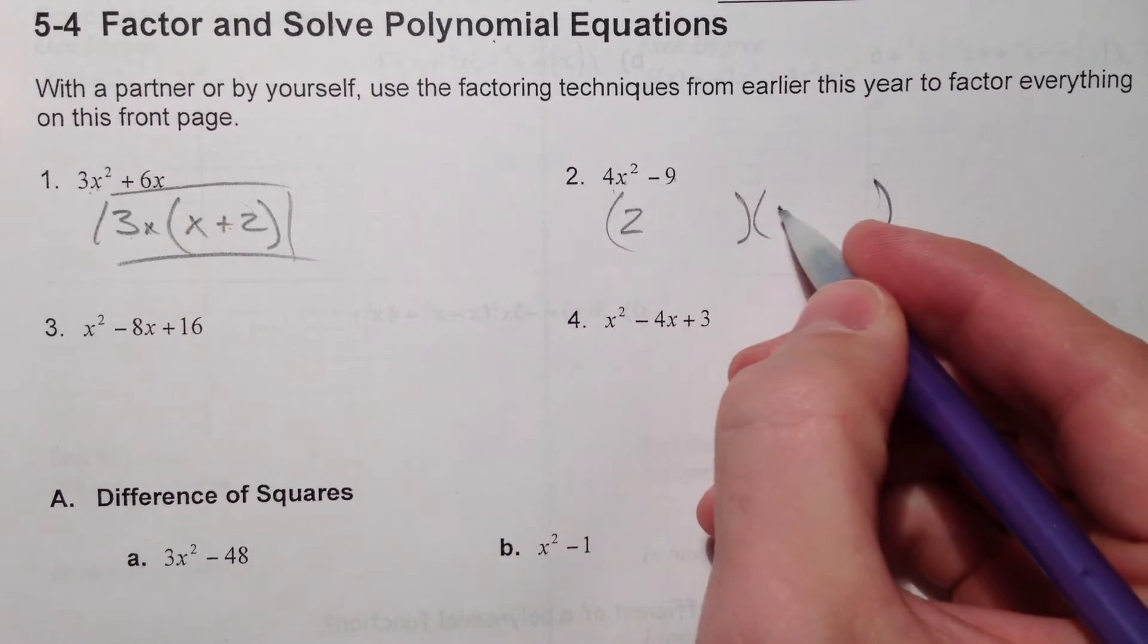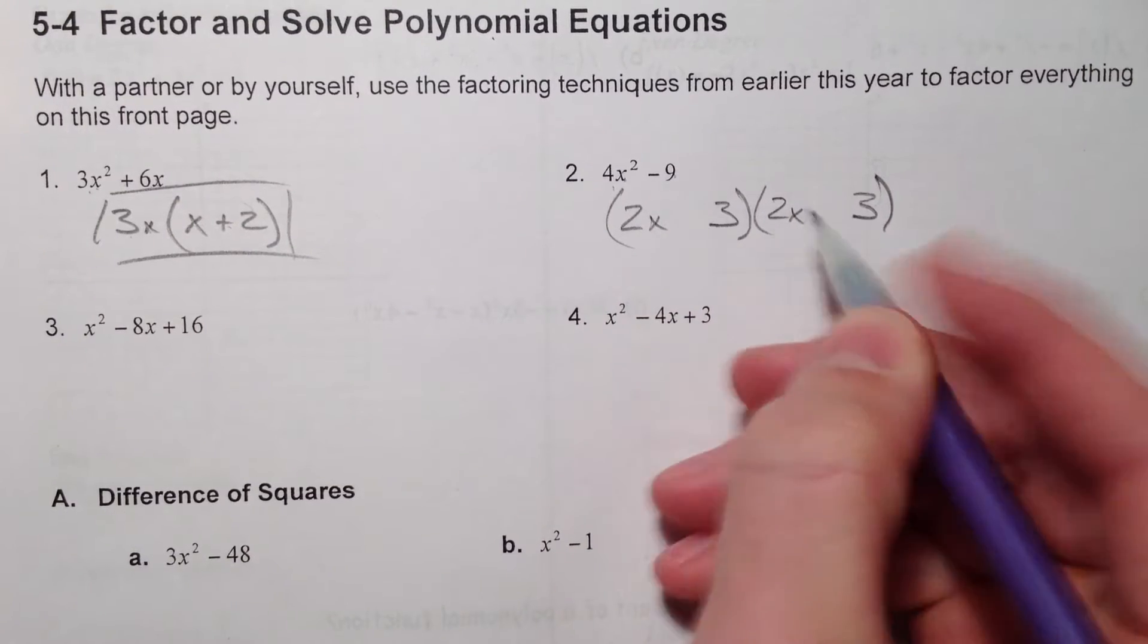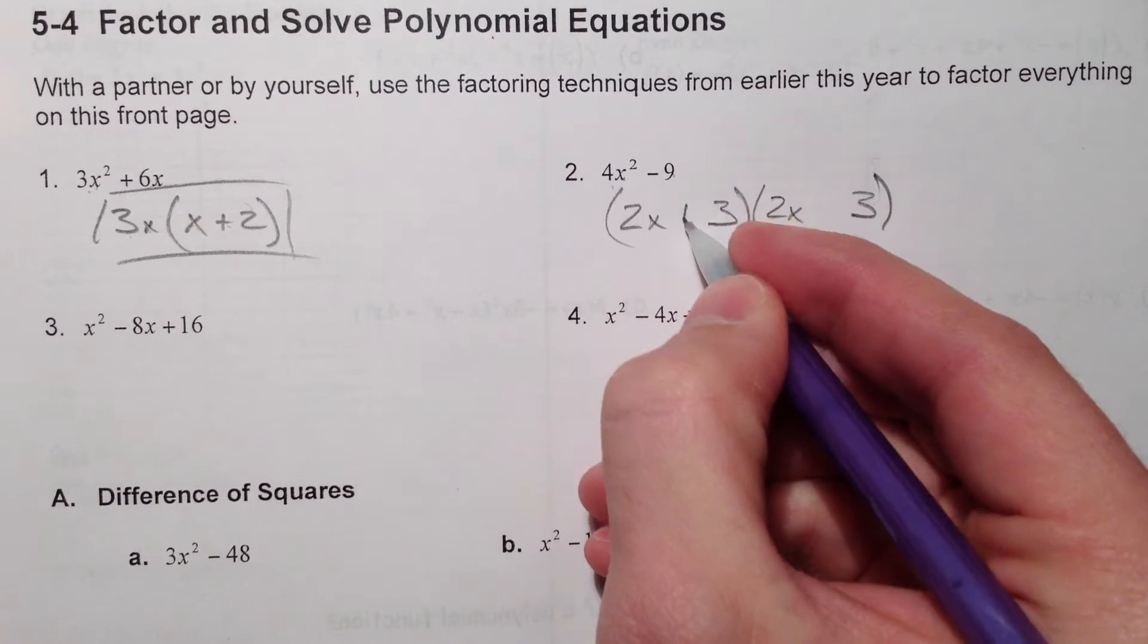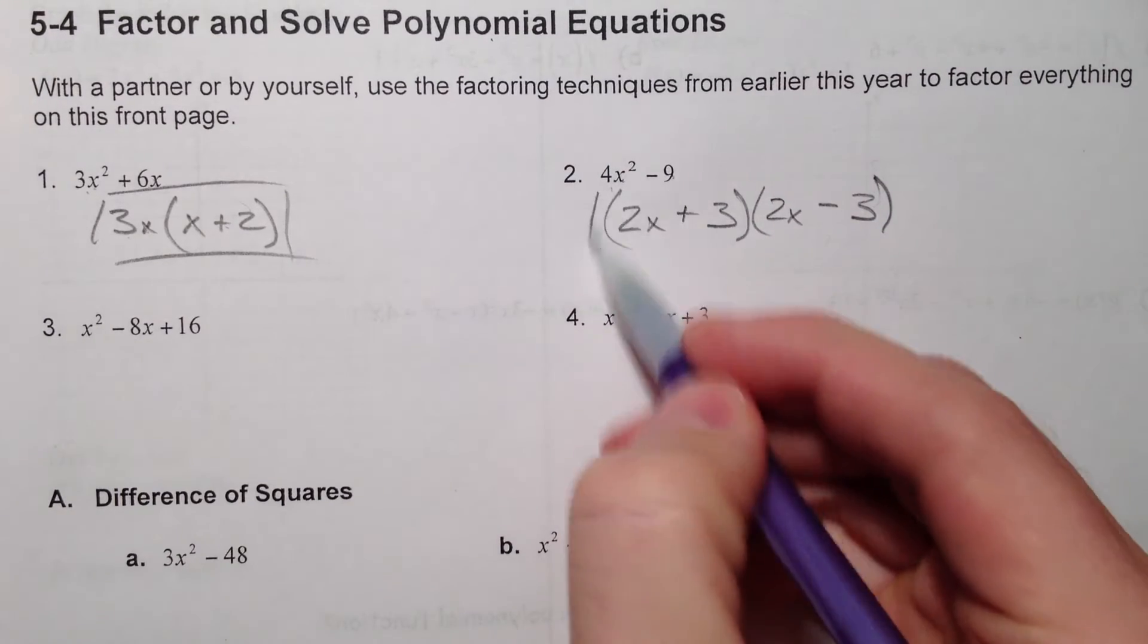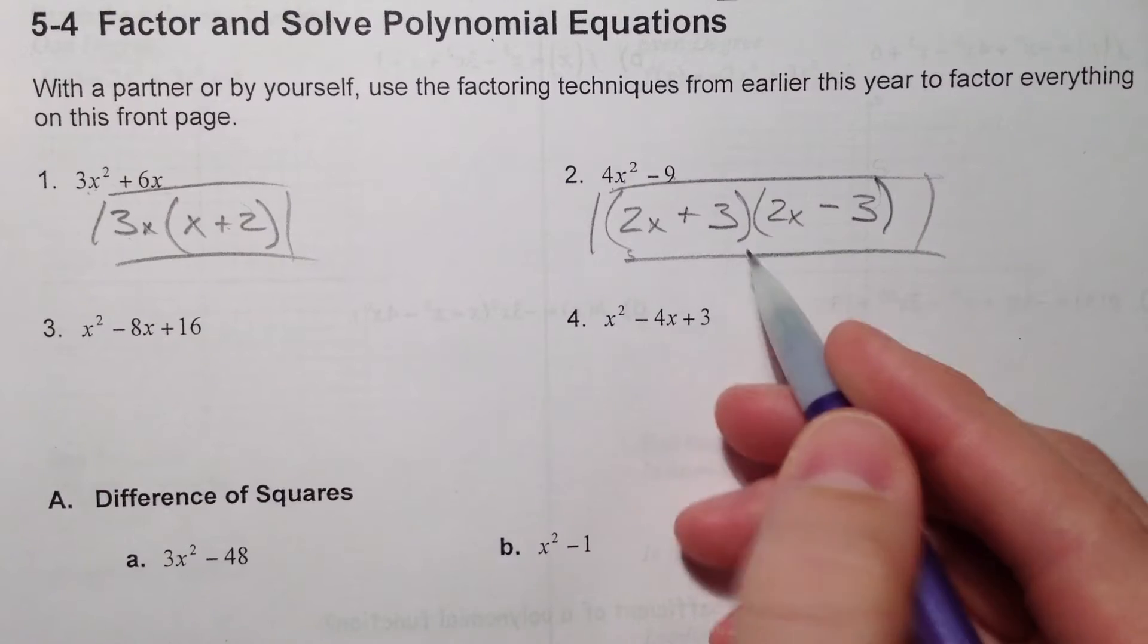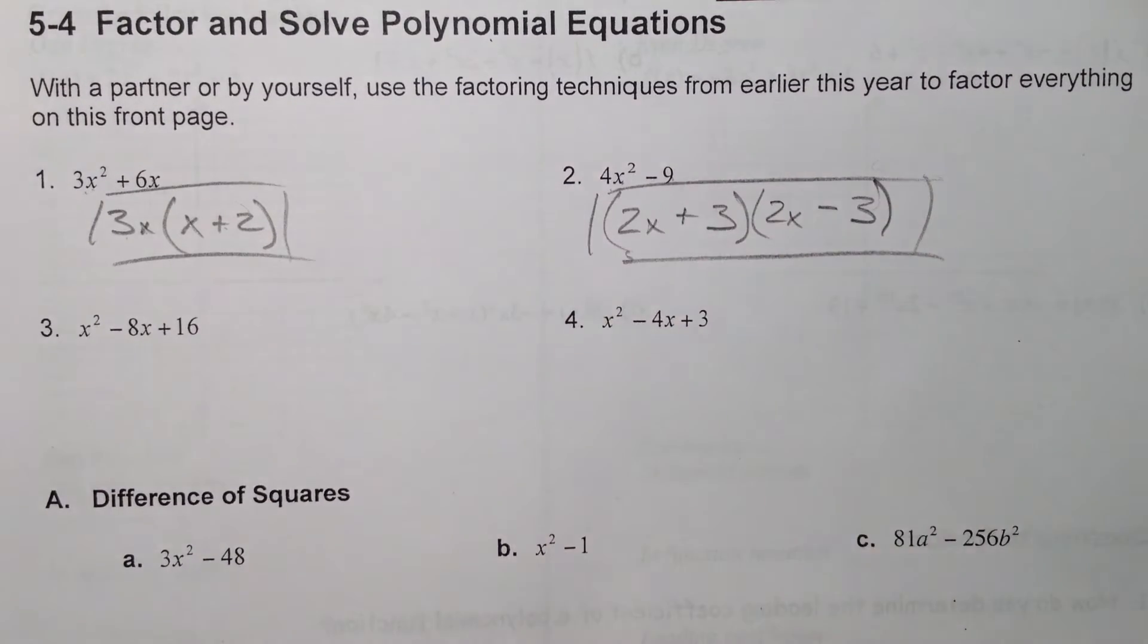2x and 2x, and 3 and 3. But in order to not have the middle term, you need a plus and then a minus. So when you multiply this out, you get negative 6x and positive 6x, and that's why you don't get that middle term.